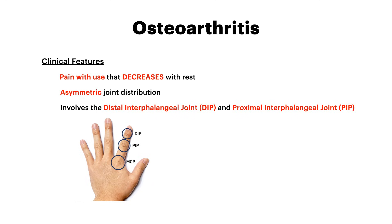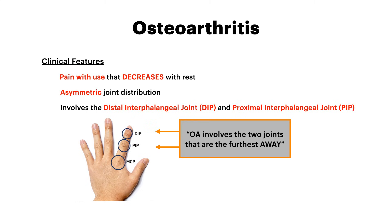The joint distribution in osteoarthritis is asymmetric — not perfectly symmetrical side to side. Random joints on either side of the body can develop osteoarthritis based on physics and mechanical stress. In the hand — and test writers love to test the hand — the joints involved in osteoarthritis are the DIP and the PIP. A helpful mnemonic: OA sounds like 'away,' so OA involves the two joints furthest away, i.e., the most distal — DIP and PIP.